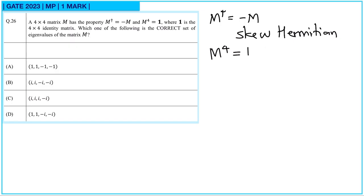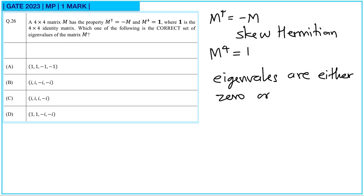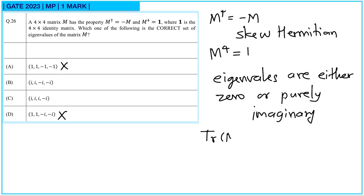Since it is a skew-Hermitian matrix, the eigenvalues are either 0 or purely imaginary. Options A and D have real eigenvalues, so we consider options B and C. Also, the trace of matrix M equals the sum of eigenvalues λᵢ, so their sum must equal 0. In option B, the addition equals 0, so option B is correct.